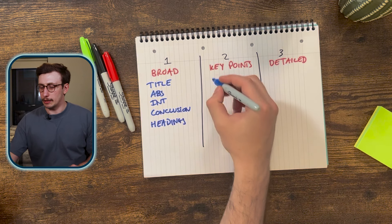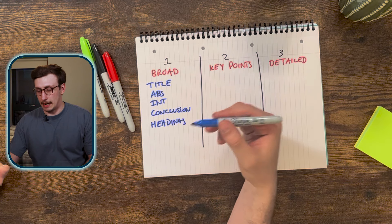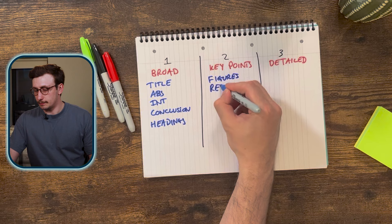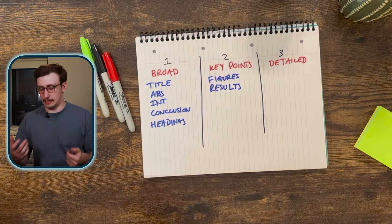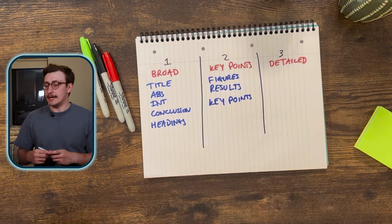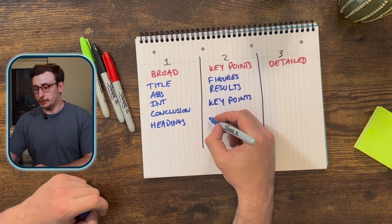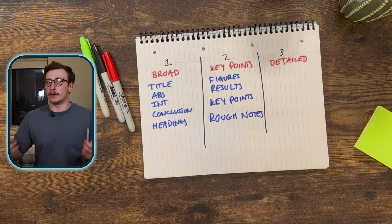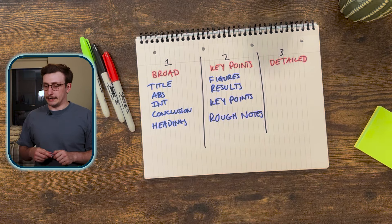In the second pass — the key points pass — you go into more depth on the introduction and abstract, and you also look at the figures, results, and skim through the discussion to pick out key points. Look for anything in bold or italics, as researchers use these to emphasize important information. It's also useful in this pass to make rough notes on the key points so you can refer back to them later.